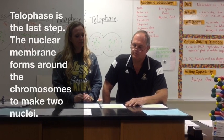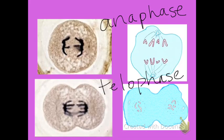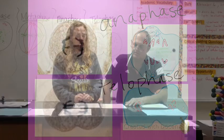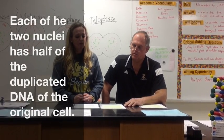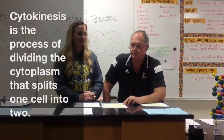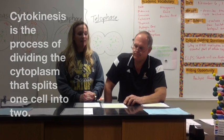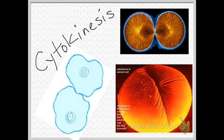The cell starts to split into two pieces. These are the third and fourth stages of mitosis: anaphase and telophase. We now have two separate cells with each half of the original DNA. While mitosis is the division of the nucleus, next comes cytokinesis, which is the division of the cytoplasm. Cytokinesis causes the cytoplasm to split the cell into two, creating two new cells.